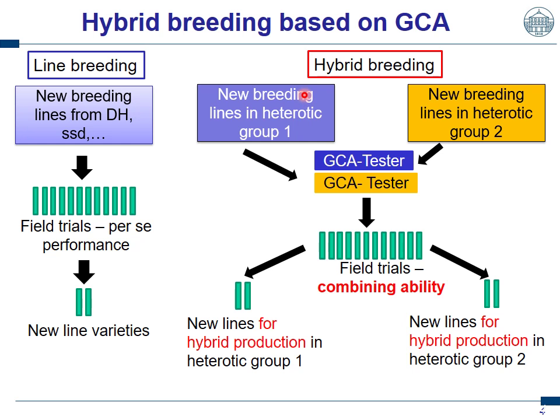In hybrid breeding, you have a two-pool concept. You have heterotic group 1 and group 2, which form together one heterotic pattern. In both heterotic groups, you develop new lines like in line breeding with the DH method, SSD, or similar. However, you are not interested in their per se value like in line breeding, but in their combining ability to the opposite group.